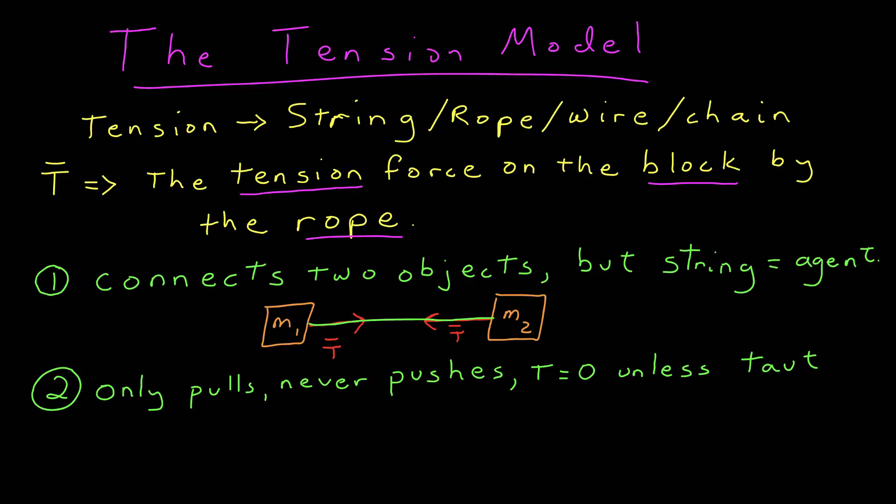Or the tension on mass 2 is away from mass 2 because the string is pulling on mass 2 as well. Also, the length never changes. So if the string has some length L, L is a constant.